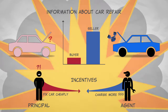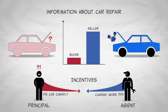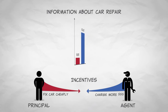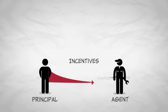In this case, there are conflicting incentives and you don't have the information to know a good deal from a bad deal. Ideally, you would like to align the incentives of the mechanic with yours so you don't get swindled. That is, at least in principle, how you can solve a principal-agent problem.